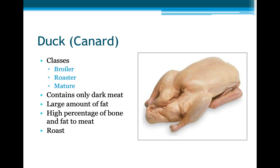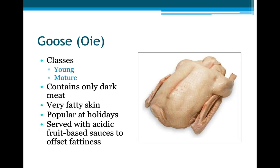Duck meat usually comes in broiler, rooster, and mature classes. It contains only dark meat, a large amount of fat, and a high percentage of bone and fat to meat. Goose usually comes in two classes — young and mature. It contains only dark meat, has a very fatty skin, is popular at holidays, and is served with acidic fruit-based sauces.